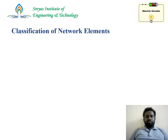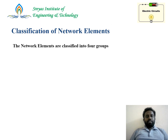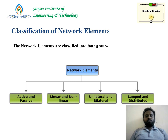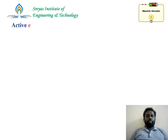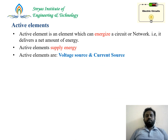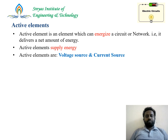Let's see the classification of network elements. Network elements can be broadly classified into four groups: active and passive elements, linear and non-linear elements, unilateral and bilateral elements, and lumped and distributed elements. Active elements are those which can energize the circuit or supply or deliver energy. Examples are voltage source and current source.